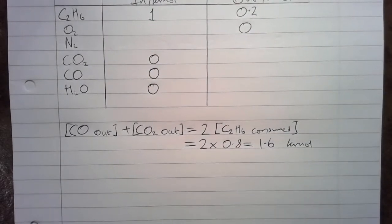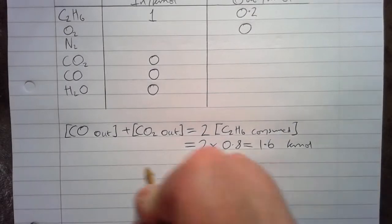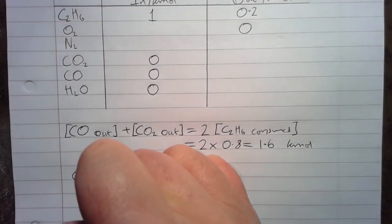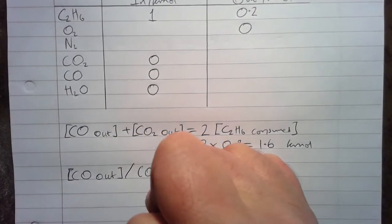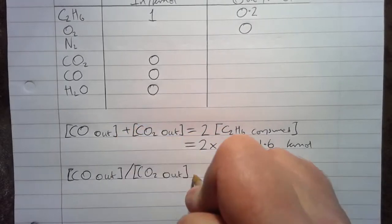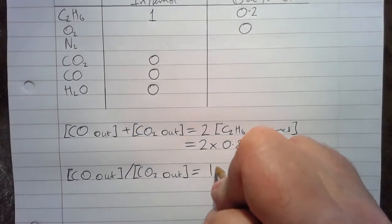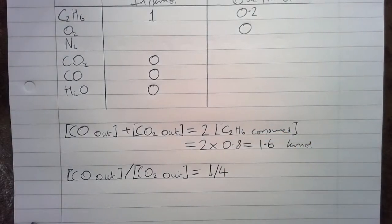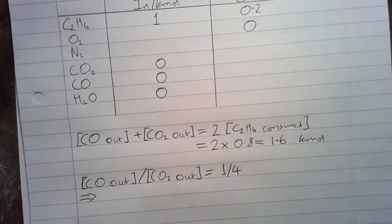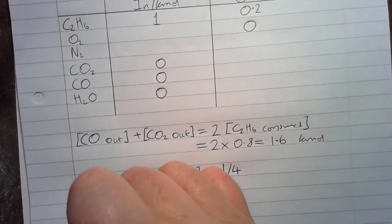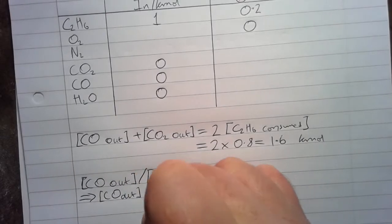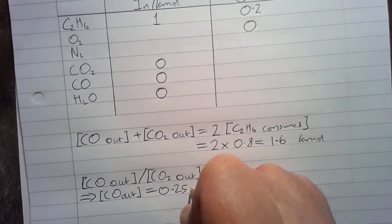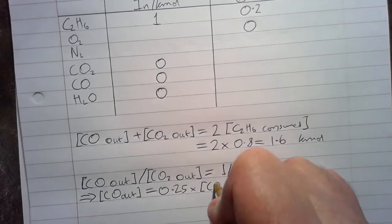We also know from the question information that the CO out divided by CO2 out equals 1 over 4, and that's because there's a 1 to 4 ratio of these gases in the outlet. So if we rearrange this, we know that the CO out equals 0.25 times CO2 out.